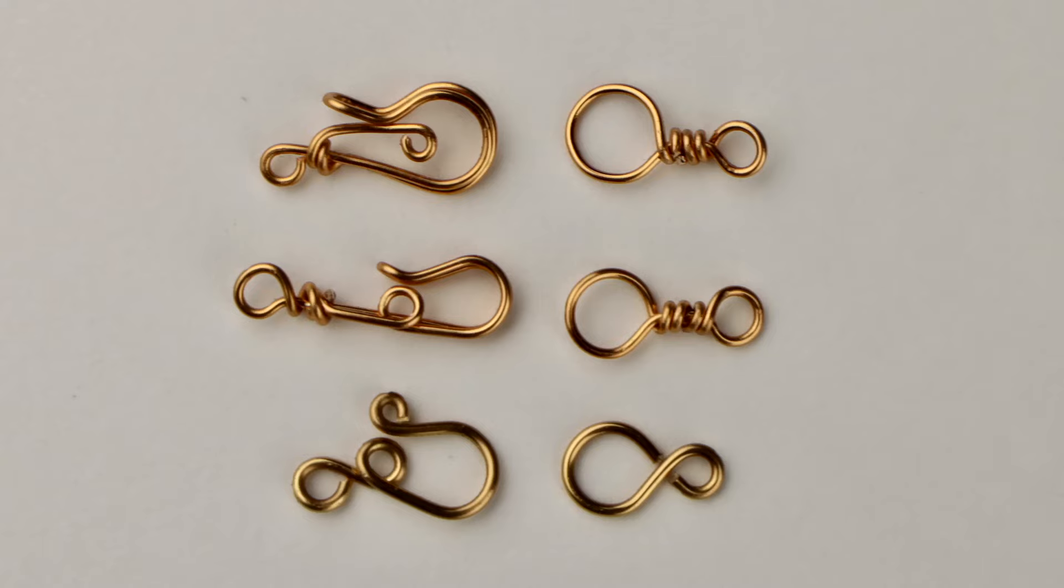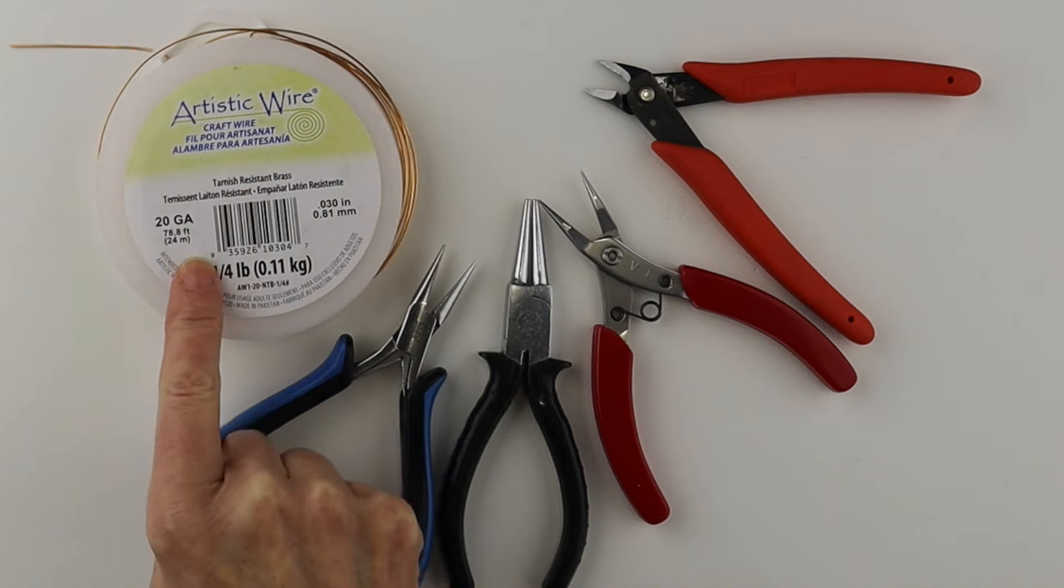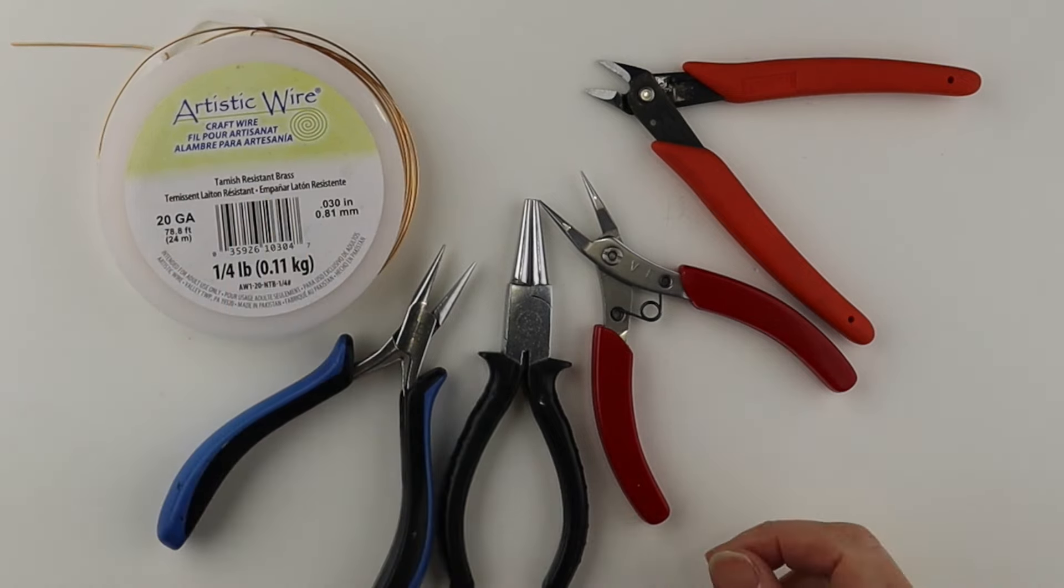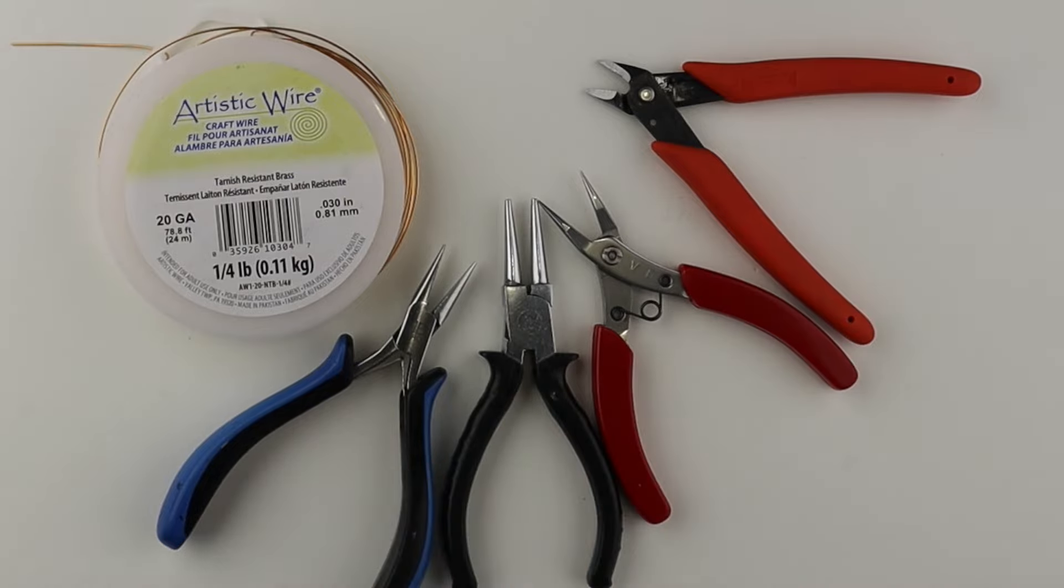Hello live wires, it's Tip Tuesday. Today I'm going to show you how to make some clasps out of wire that are a great alternative to lobster clasps. What you're going to need for this project is 20 gauge wire. I'm using tarnish resistant brass. You can use half hard wire. I have my cutters, round pliers, and flat pliers.